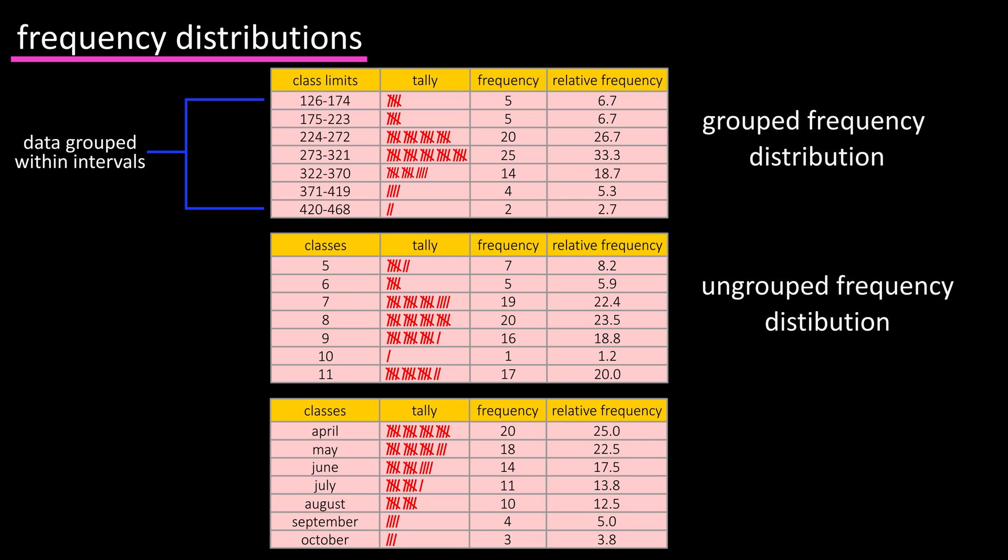An ungrouped frequency distribution has classes with a single data value, and these are used when the range of data values is small.